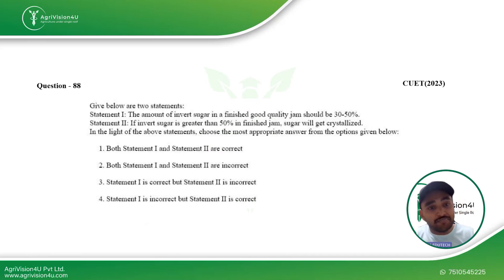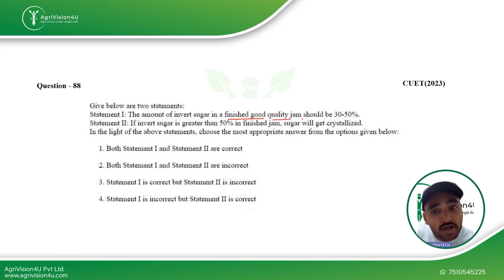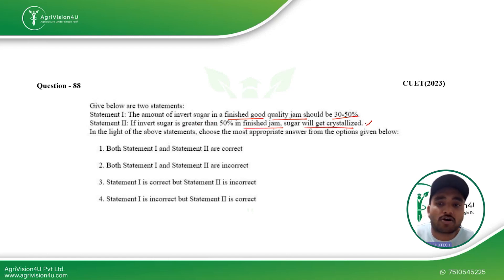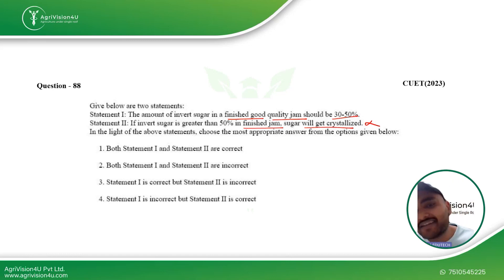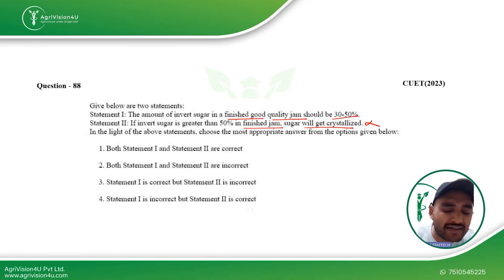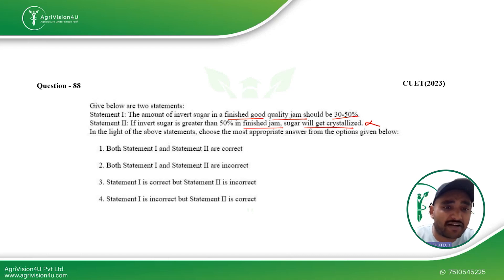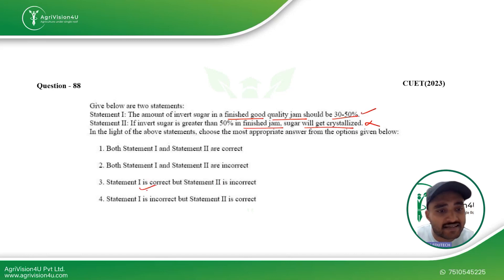Next is a statement-based question. Statement one: the amount of invert sugar in finished good quality jams should be 30 to 50 percent — this is correct. Statement two: if invert sugar is greater than 50 percent in finished jam, sugar will get crystallized — this is wrong, because invert sugar does not crystallize easily, and around 65 percent is usually advised. Statement one is correct and statement two is incorrect, so the third option is the right answer.